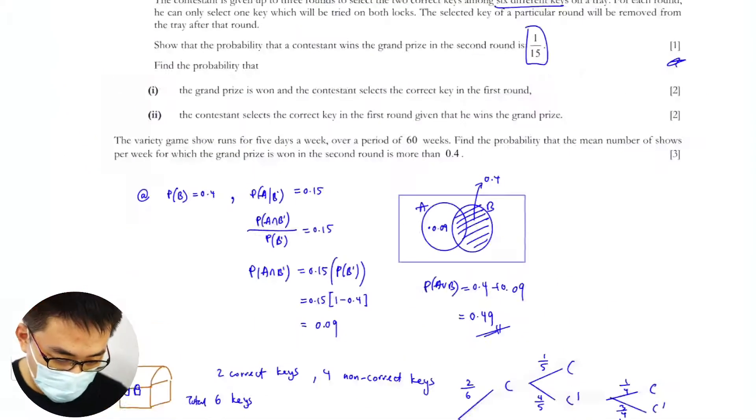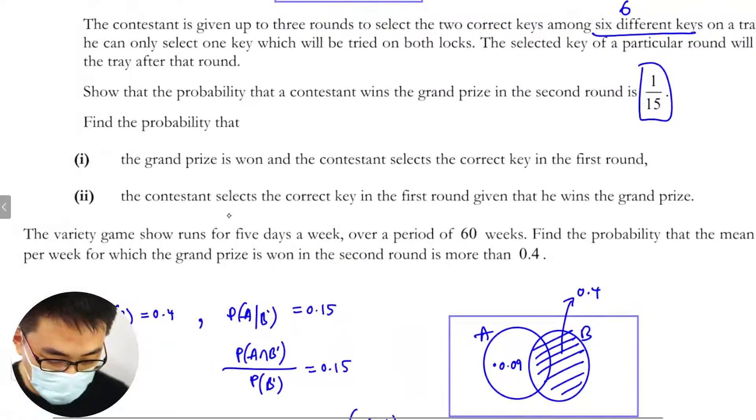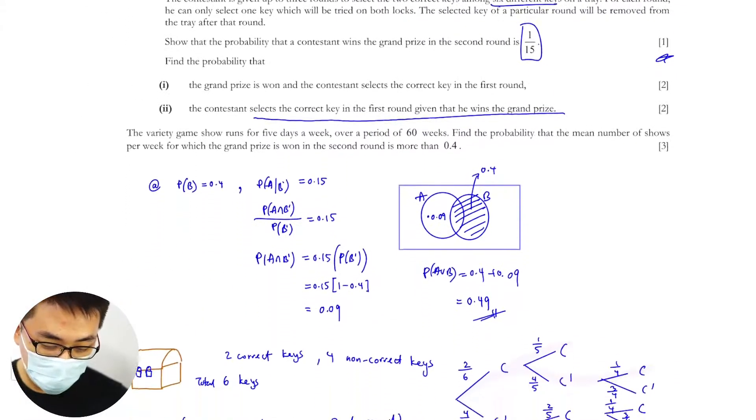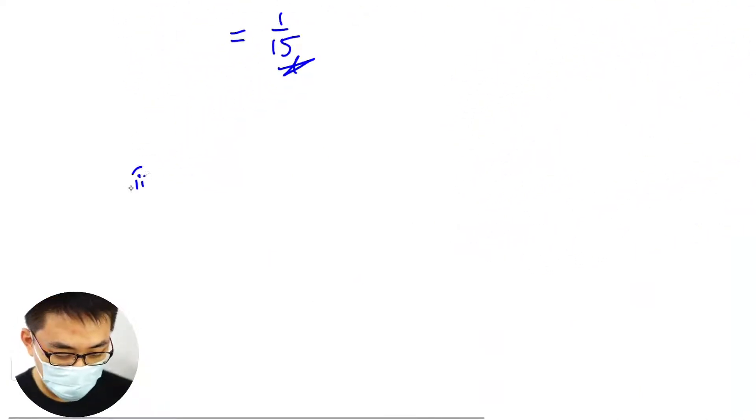Part two is we want to find the contestant selects correct key in the first round given that he wins the grand price. So part two required probability.